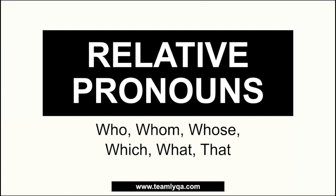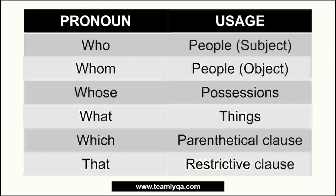Alright, here's our lecture on relative pronouns. We're going to talk about who, whom, whose, which, what, and that. The overly generalized summary of their usage is this: you use 'who' if you're talking about people and the person is the subject of the sentence. 'Whom' if it's a person but they are the object of the sentence. 'Whose' is used for possession — who owns something. 'What' is used for things, and 'which' is also used for things but with a distinction we'll talk about later. 'Which' is also used in parenthetical clauses — meaning the clause can be removed. 'That' is used for restrictive clauses, meaning it's important to the sentence.